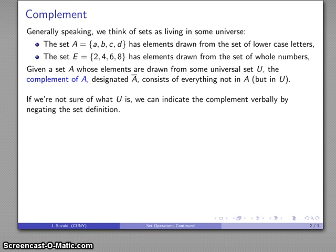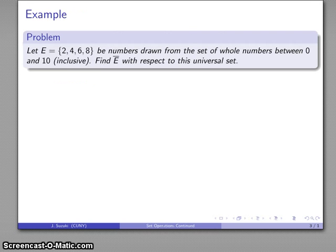Now, if we're not entirely sure what a universal set is, if it hasn't been identified explicitly for us or there's several possibilities, we can describe the complement verbally just by negating the set definition. We'll see an example of that.